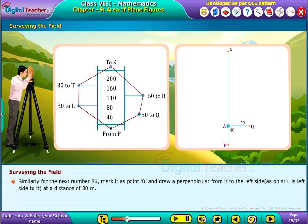Similarly, for the next number 80, mark it as point B and draw a perpendicular from it to the left side as point L is left side to it at a distance of 30 meters. Similarly, draw the other perpendiculars as shown on screen.